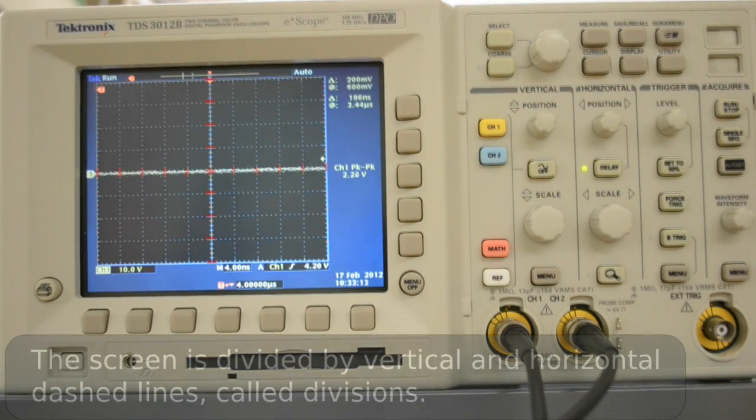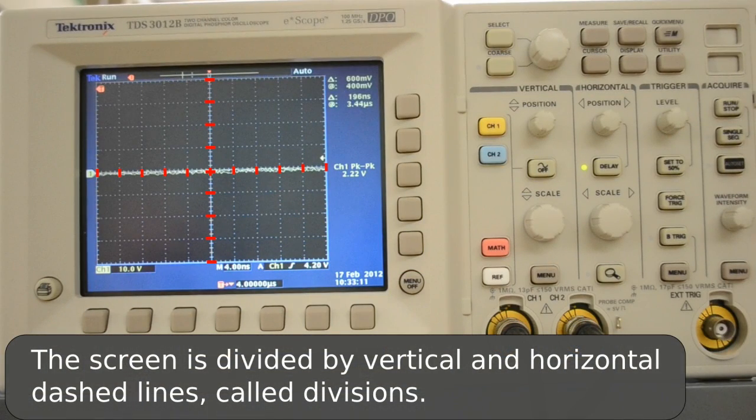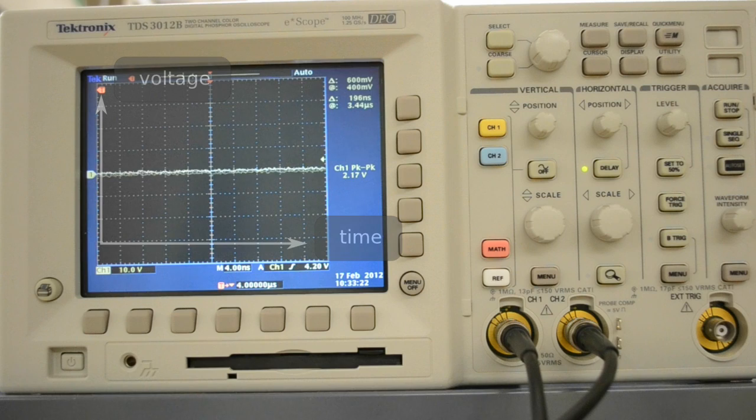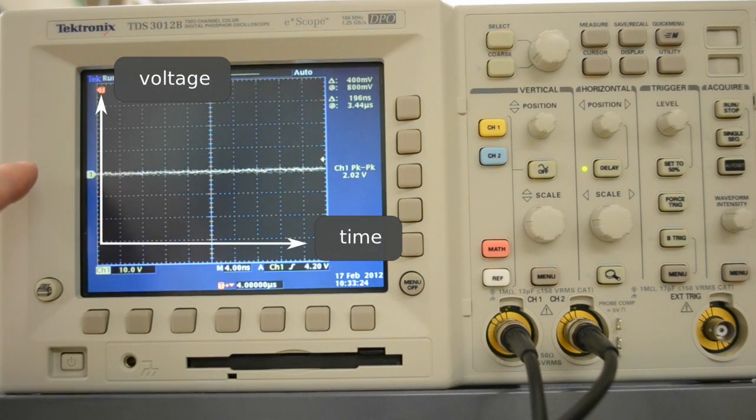Let's talk about the scale on the oscilloscope screen. Each of the horizontal and dotted lines is a division. The horizontal axis is time and the vertical axis is voltage.